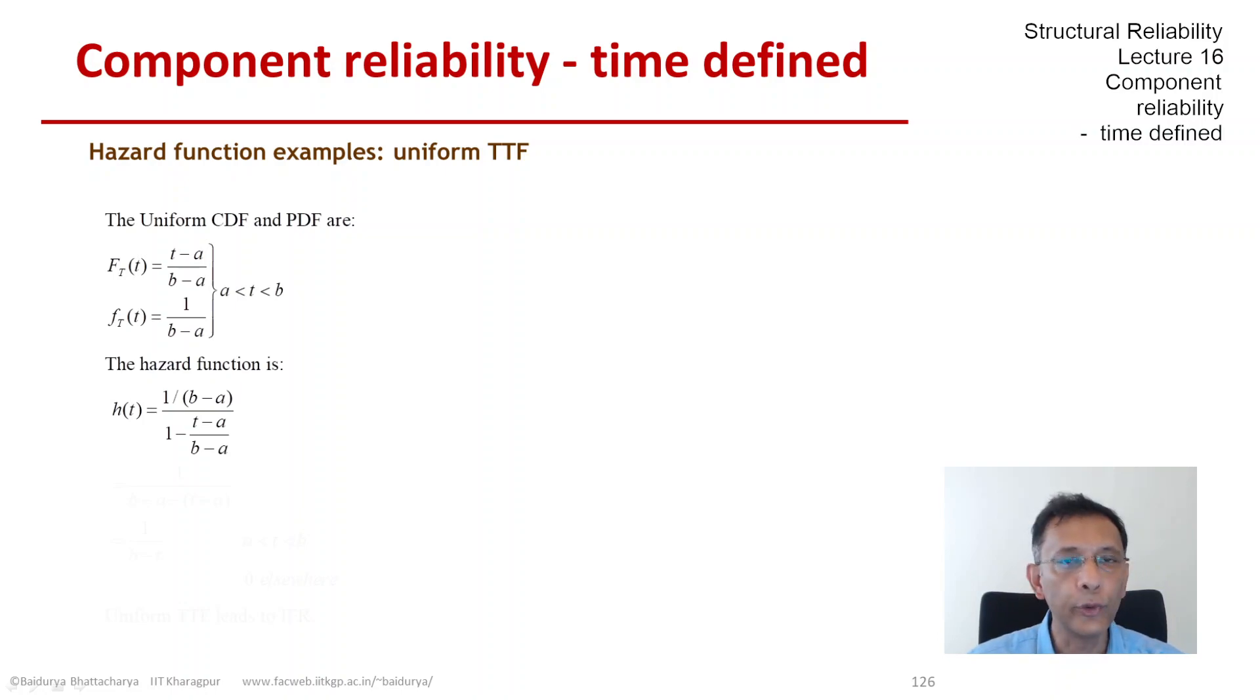And if we simplify it, we end up at a hazard function which is equal to 1 over b minus t, t being the realization of the random variable between a and b only. It's 0 elsewhere.